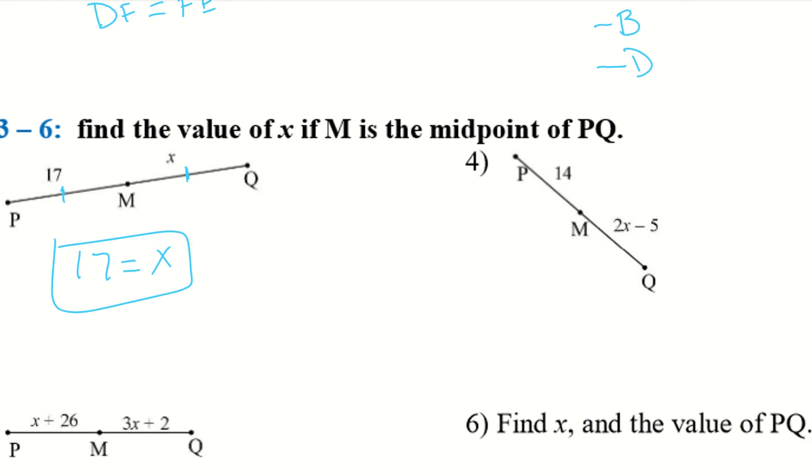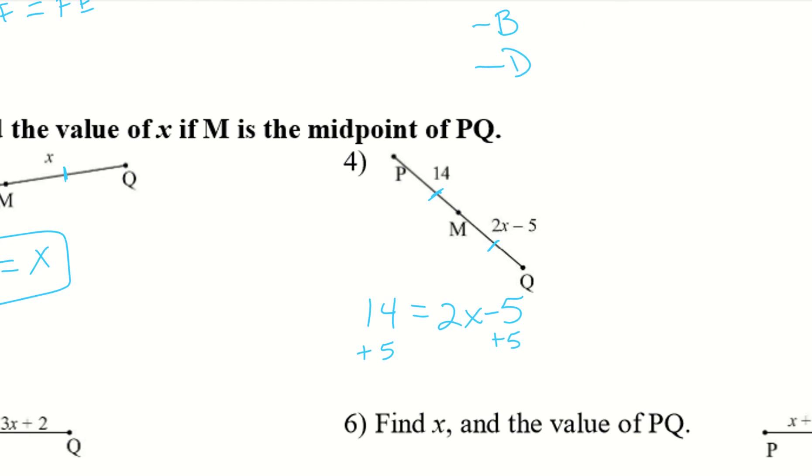Then with four, we have our mid-segment again. 14 is congruent to 2X minus 5. So once again, I'm going to write that equality statement. This time we have to do a little bit of work though, because X isn't by itself. So we're actually going to have to solve for X this time. So I'll go ahead and add 5 to both sides. We have 19 equals 2X divided by 2, and 19 over 2 equals X.